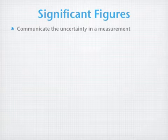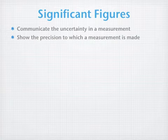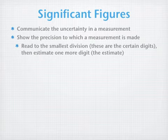Significant figures are a way to communicate the uncertainty in a measurement. They show the precision to which the measurement was made — basically how precise the equipment was. To determine how many significant figures to report, you read to the smallest division of the device. These are the certain digits. Then, because the eye is very good at estimating, you estimate one more digit between the last two smallest divisions.